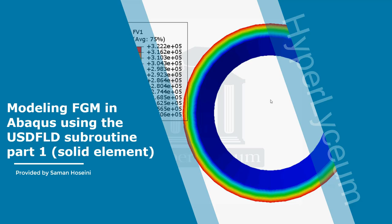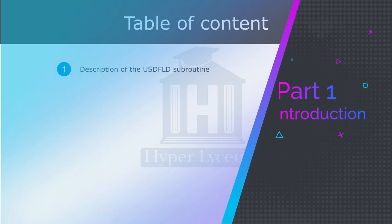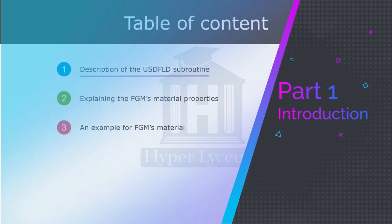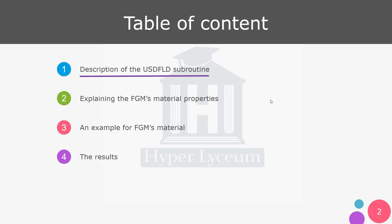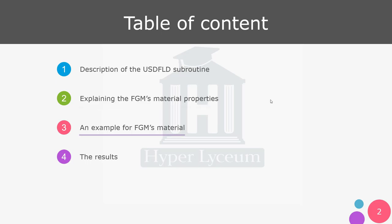In the second video of this tutorial I will model the cylinder structure using shell elements. First and foremost I will describe the USDFLD subroutine and the parameters used in this process. After that I'm going to explain FGM's material properties, then provide an example of FGM's material using the USDFLD subroutine in Abaqus.